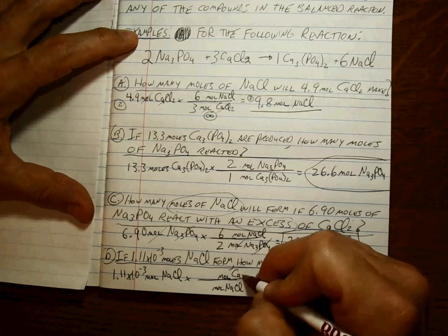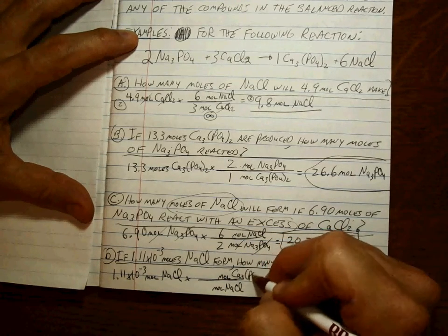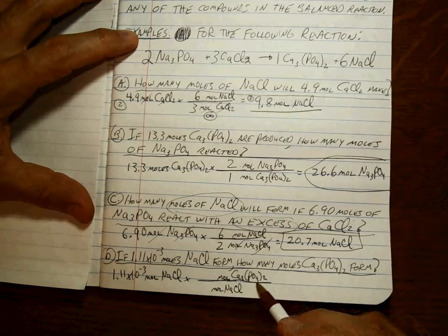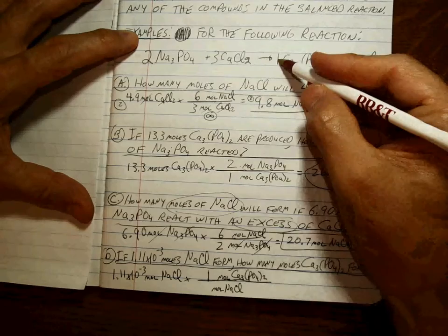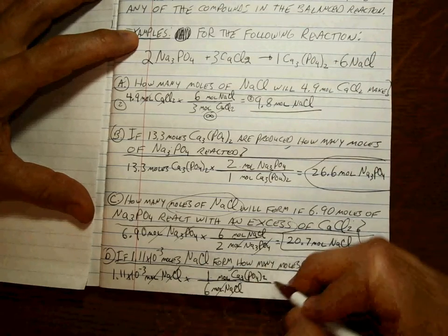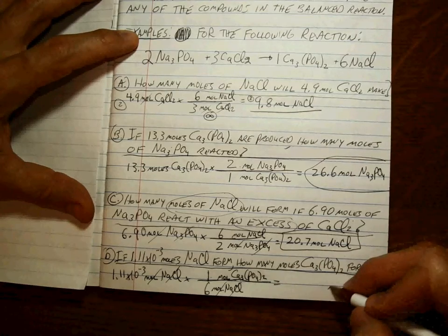And since what you want is the calcium phosphate moles, that has to go on top. That ratio is 1 to 6. Everything cancels except what I want.